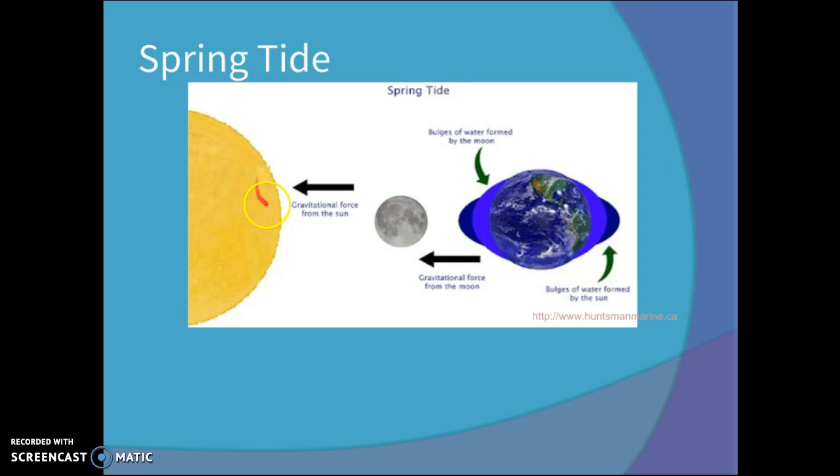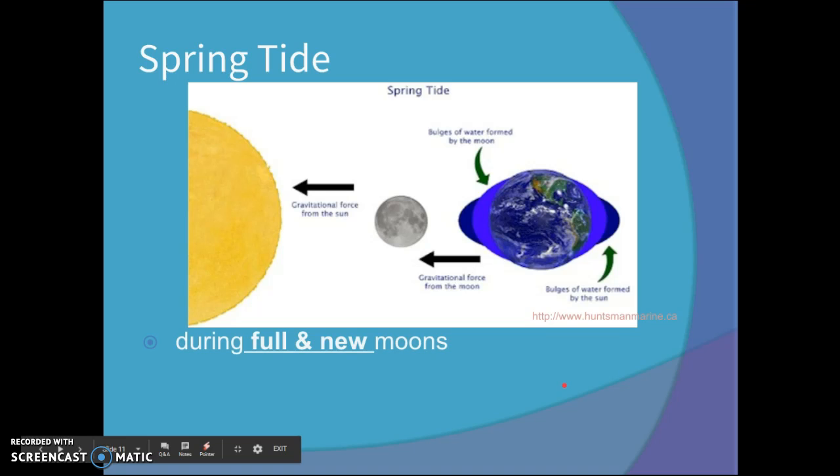Another good example here. Spring tide. Gravitational force working together. Moon and Sun creating extra high tides and extra low tides. This only occurs during a full or a new Moon. So the Moon would either be here, or would be over here.